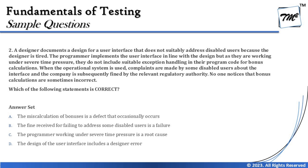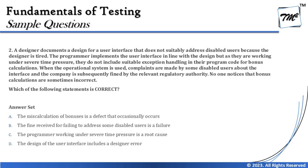Option C says 'the programmers working under severe time pressure is a root cause.' Yes, that could indeed be one of the reasons. Sometimes a simple option is the right answer rather than a more complicated statement, because complicated statements often have something hidden in them requiring closer attention. The fine was not due to implementation failure or a feature not working — it's more of a regulatory check finding that you're not serving a group of users you were supposed to. So option C looks most relevant here.